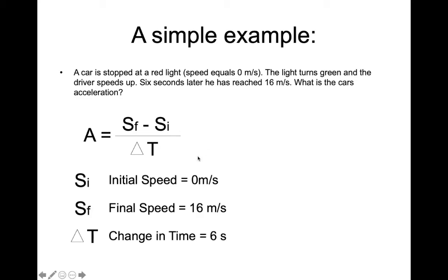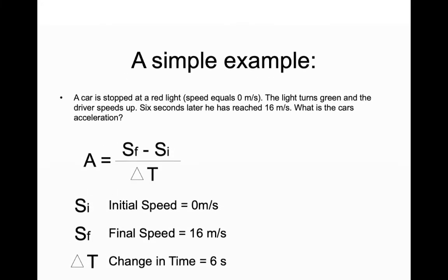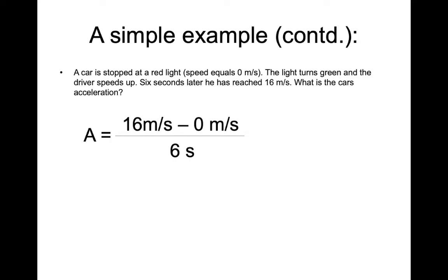We'll begin with the formula and let's take a look at those numbers. We did say that the car stopped at the red light. So the initial speed is zero meters per second. We did say that after the light turns green, he speeds up to 16 meters per second. That's the final speed, 16 meters per second right here. And we were told that it took six seconds for that change to occur. So that's your delta T or change in time, six seconds. Let's substitute those numbers into the equation. There they are. The acceleration is equal to 16 meters per second minus zero meters per second divided by six.